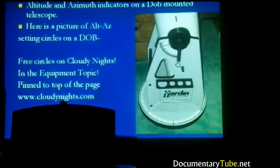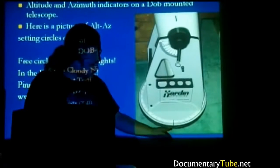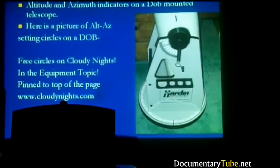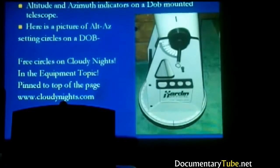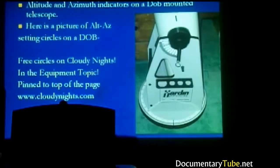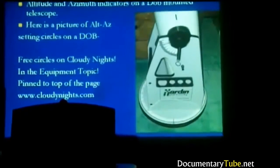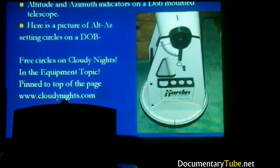TELRADs are different from finder scopes — they have absolutely no magnification whatsoever. You look from the back straight through to a projected image on clear glass or plexiglass. What you see is a set of red concentric circles of very specific sizes: the outer ring is 4 degrees, the inner ring is 2 degrees, and the tiny center dot is half a degree. These help you measure sky distances. If a faint object is 4 degrees from the star Deneb, you put Deneb at the edge of the 4-degree ring and your object will be approximately in that area.